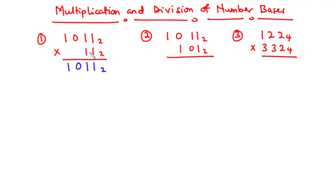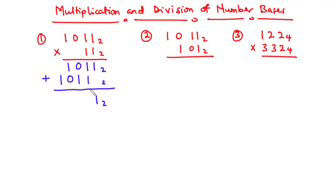Now, let's move on to the second value. 1 times 1 is 1. 1 times 1 is 1. 1 times 0 is 0. And then 1 times 1 is 1. Now, let's add these two values in base 2. 1 plus 0 is 1. 1 plus 1 is 2. Because we are working in base 2, we cannot write 2 here. So we divide 2 by the base and we have 1 remainder 0. We write the remainder here and carry on the 1.